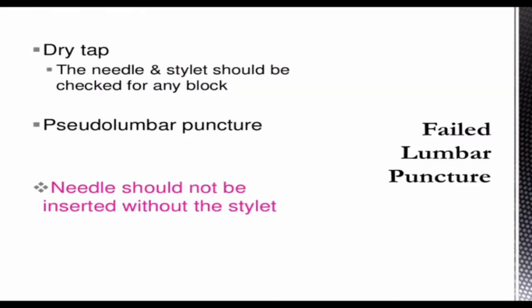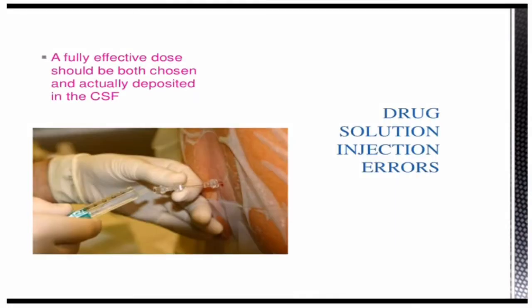During the actual lumbar puncture, there may be a dry tap due to blockade at the needle and the stylet. The needle and stylet should be checked for any obstruction in such cases. There may also be a pseudo lumbar puncture. An important point is that the spinal anesthetic drug should be a fully effective dose and must be actually deposited in the CSF.